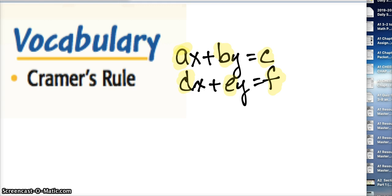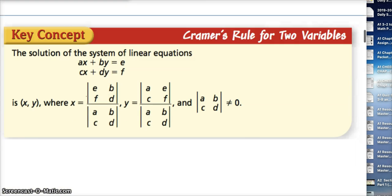Cramer's Rule gives us an opportunity to solve systems of linear equations, or systems of equations in 2, 3, 4 variables, kind of indefinitely. We do it by only looking at the coefficients and constants highlighted here.